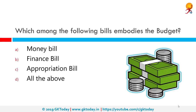Which among the following bills embodies the budget? The correct answer is the Appropriation Bill. An Appropriation Bill, also known as Supply Bill or Spending Bill, is a proposed law that authorizes the expenditure of government funds. In most democracies, approval of the legislature is necessary for the government to spend money.